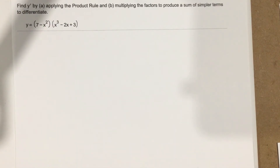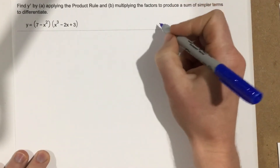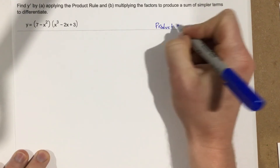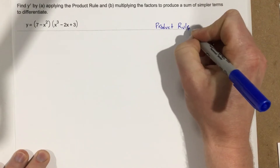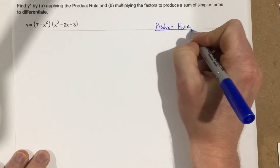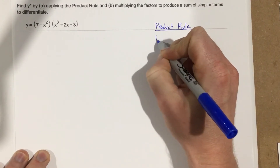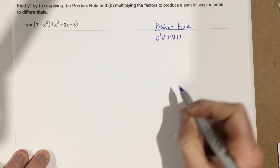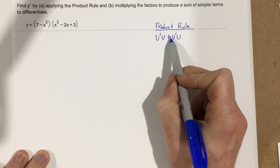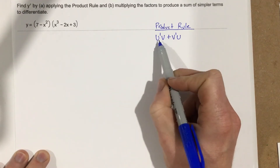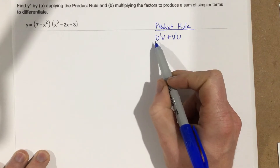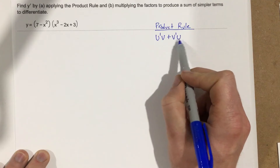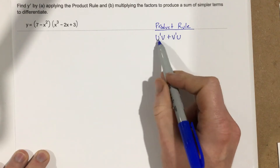They're also going to have us compare it to distributing out all the terms and taking the derivative that way. So let's start with the product rule. The product rule is u prime times v plus v prime times u. The good part is because of the addition, it doesn't matter how you write it — some versions write uv prime plus vu prime. It's the same idea.